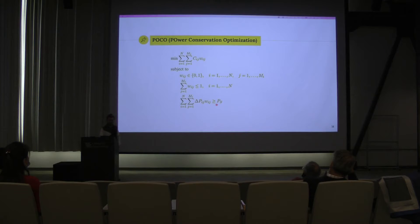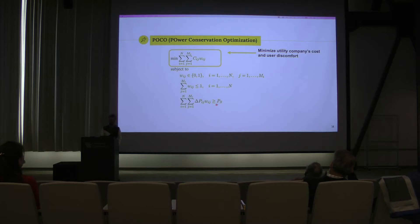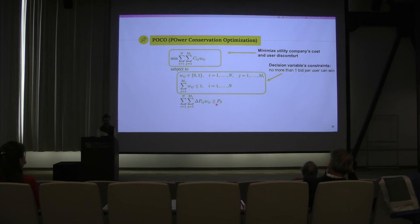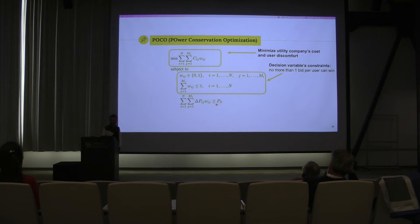The problem formulation we have, we call it POCO, which stands for Power Conservation Optimization. The objective function is to minimize the utility company's cost. Intuitively, because a user would ask for more money for a bigger temperature change, by reducing the cost we are also trying to minimize user discomfort. We have a set of constraints — the decision variable is a binary variable — and we make sure to select no more than one bid per user, because each user can only apply one thermostat change. And then finally we have the power saving constraint.